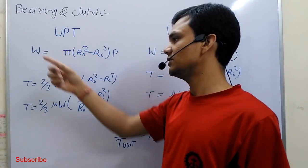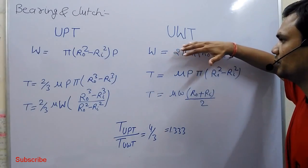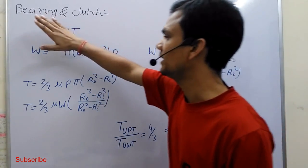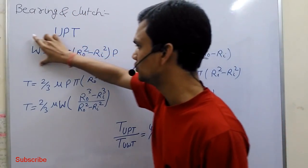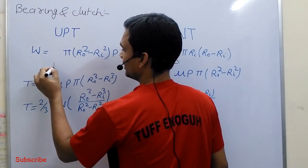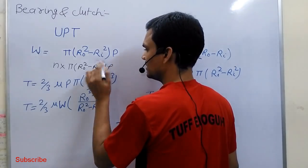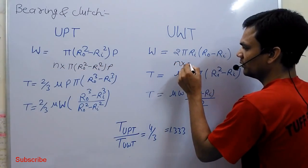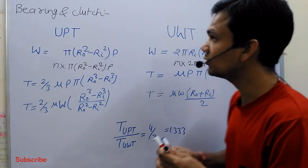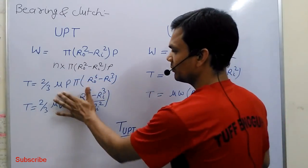In bearing, the function is to resist the load. Generally we use uniform pressure theory for bearing. If the load in a bearing increases, we revise the formula with a new formula. In the case of uniform wear theory, the formula will also change accordingly. If the load increases, we multiply the load by N times and the torque will remain the same for bearing.